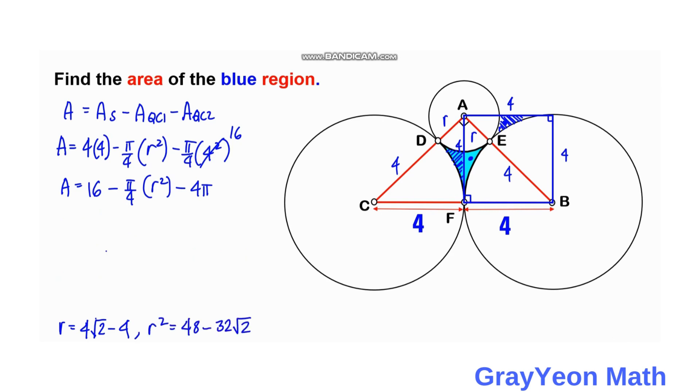We can simply substitute the value of r². So area equals 16 minus π/4 times (48 - 32√2) minus 4π. We can simply distribute this π/4. So 48 over 4 is 12π.